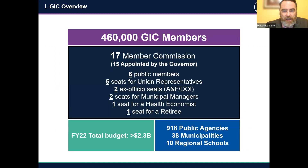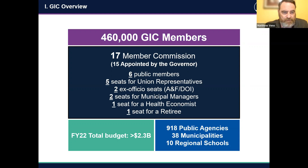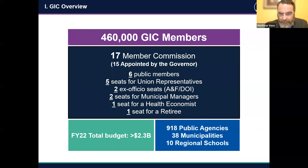We want to highlight some key data points about the GIC, including the fact that we are now over 460,000 members across the Commonwealth. We are governed by a 17-member independent commission. You'll see the specific members and entities they represent on the slide. Our annual budget is just north of 2.3 billion dollars, the vast majority of which is the claims we pay on our members' behalf. We work with a wide variety of other public entities, agencies, municipalities, and regional schools.